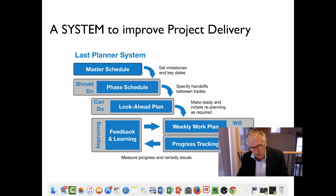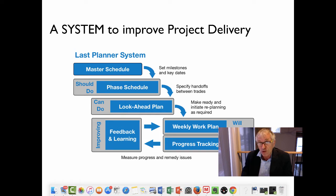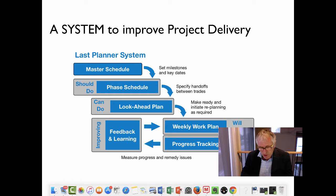It is based upon these principles: The assumption is that construction work plans are forecasted and are often wrong. Planning needs to be more detailed the closer you get to the work. Plans need to be made by the people doing the work. Constraints need to be identified and removed by the team. Construction teams must make reliable promises. And plan failures should be treated as opportunities for learning, not as a reason to blame and point fingers.